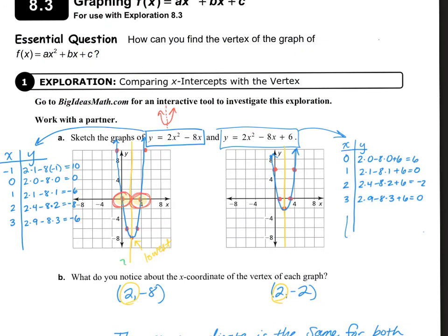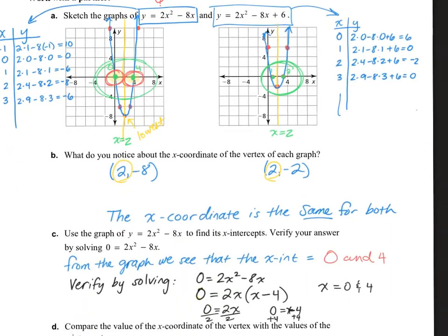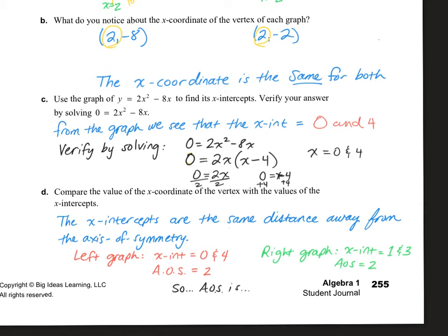One thing to notice is that on both graphs, our axis of symmetry is x equals 2. If you look at x equals 2 and my x-intercepts are at 0 and positive 4, I am 2 away from the axis of symmetry. Over here, I have my axis of symmetry at x equals 2 as well. This time I'm only 1 away, because one zero is at positive 1 and the other is at positive 3. You'll notice in both cases, the axis of symmetry is right in the middle of those zeros.